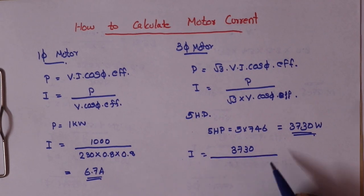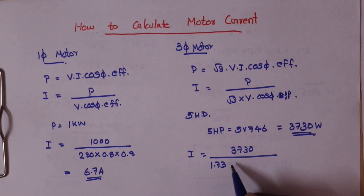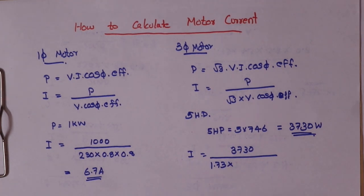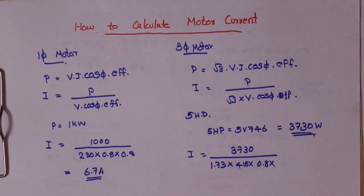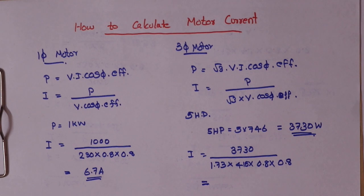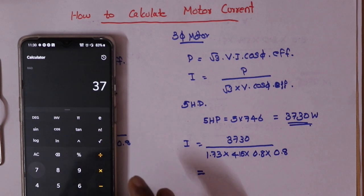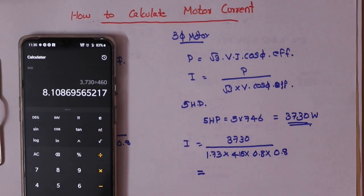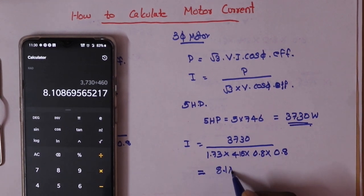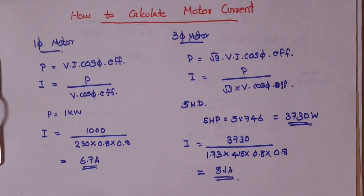Now we calculate: I is equal to 3730 divided by root 3 (1.73) times V times cosφ (0.8) times efficiency (0.8). The result is 8.1 amperes. So 8.1 amperes is the current drawn by a three-phase 5HP motor.